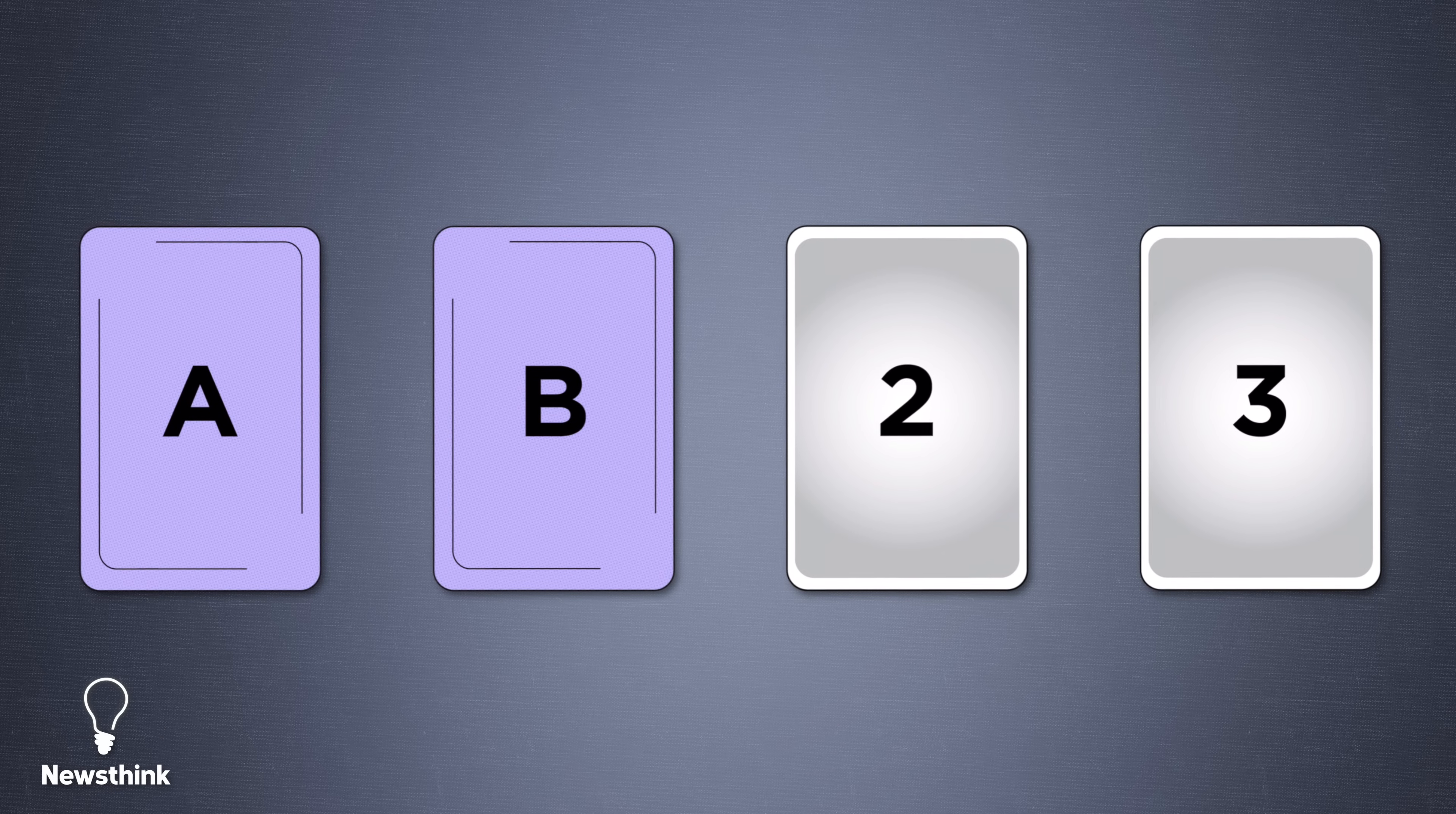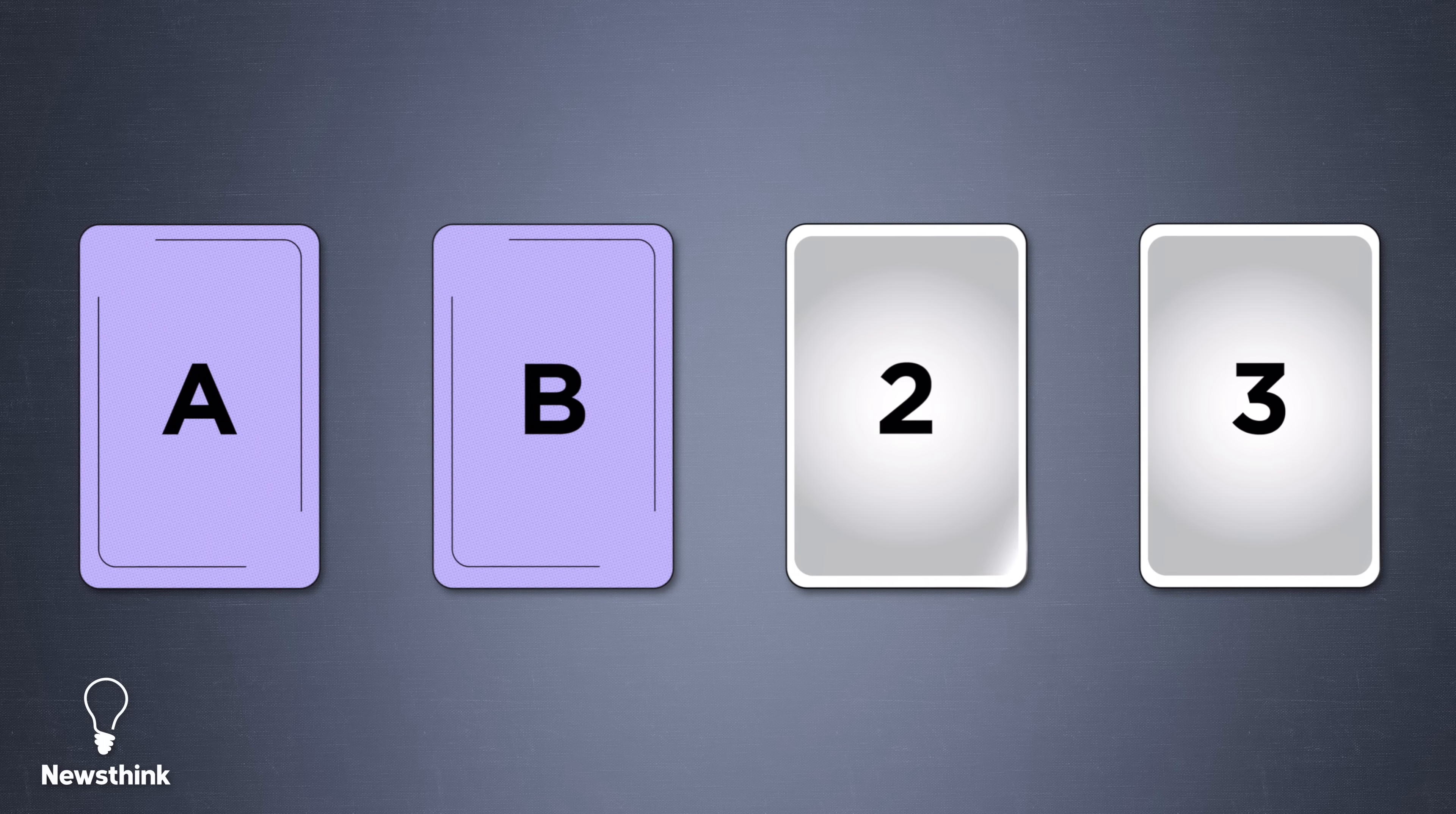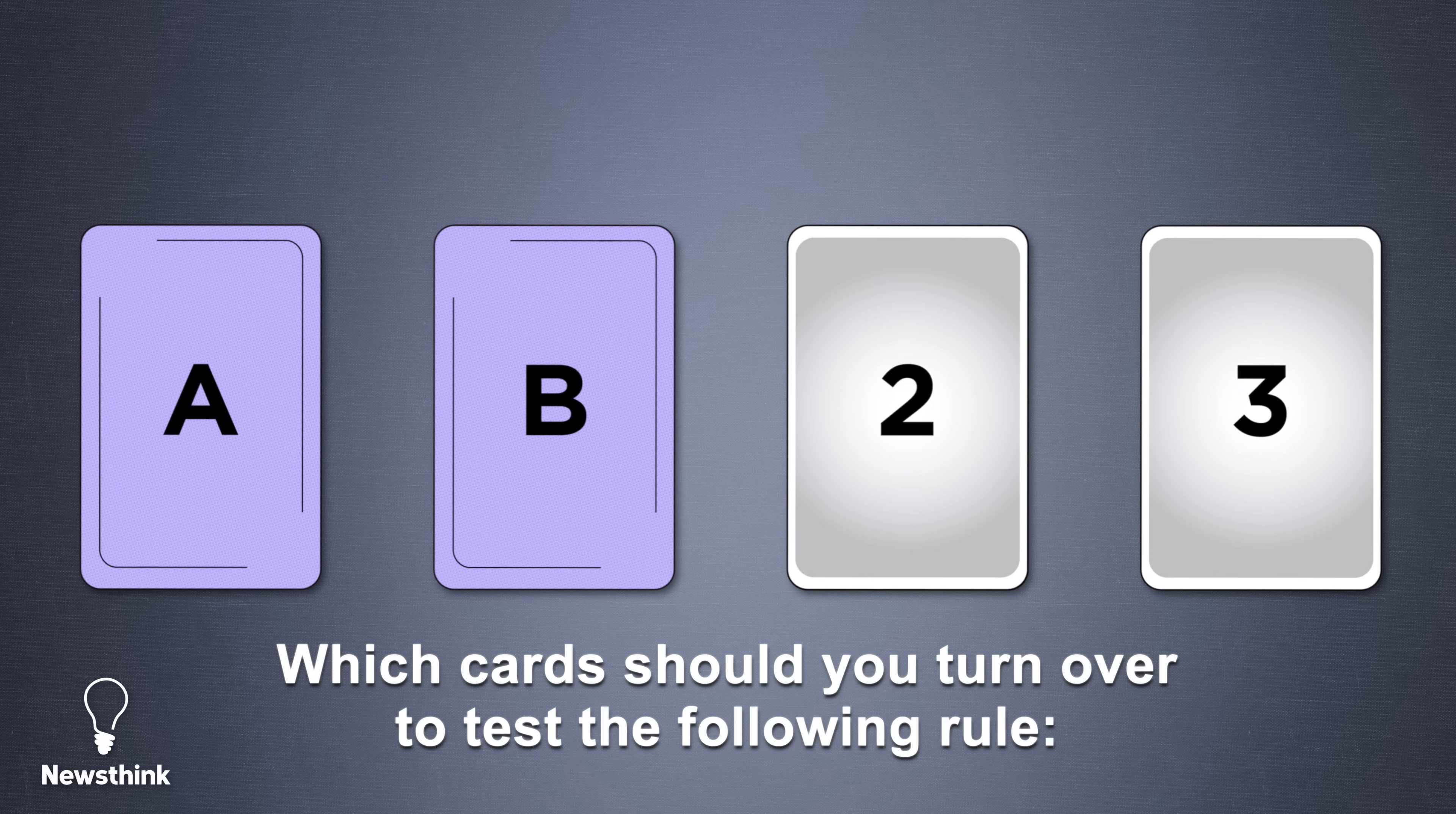This is a quick puzzle to test how good you are at problem solving. There are four cards in front of you. Each card has a letter on one side and a number on the other. You need to turn over the cards to prove the following rule is true.